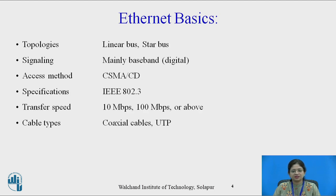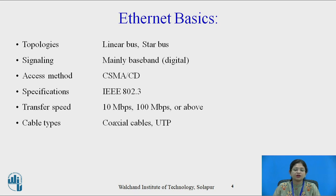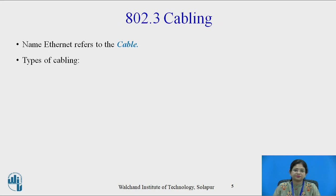Now these are the Ethernet basics. The topology it uses is linear bus and star bus. Signaling is mainly baseband, which is a digital signal, and the access method is CSMA/CD. Its specification is IEEE 802.3. Transfer speed is 10 Mbps, 100 Mbps and above. It uses coaxial cable and UTP — Unshielded Twisted Pair. The name Ethernet indicates the cable, and there are various cabling techniques provided by the 802.3 standard.